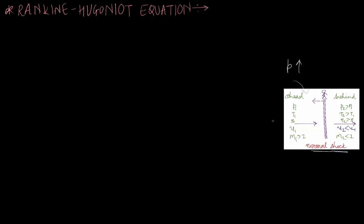In the last section we derived property relations for normal shock waves in terms of velocity and Mach numbers. We can also express those property relations in terms of purely thermodynamic properties, without any reference to velocity and Mach number. This equation involving purely thermodynamic properties is called the Rankine-Hugoniot equation. Now let us derive it.